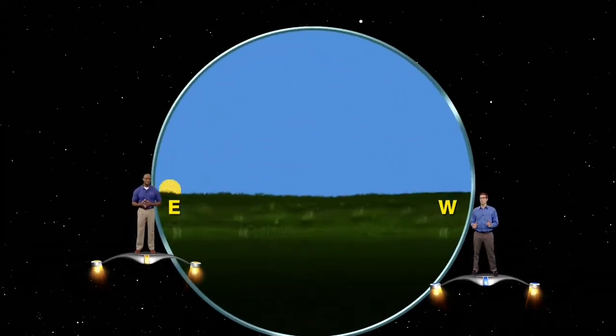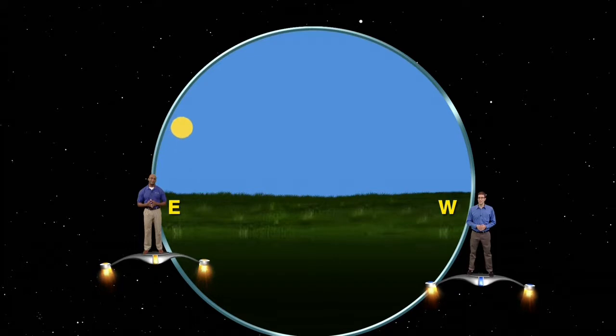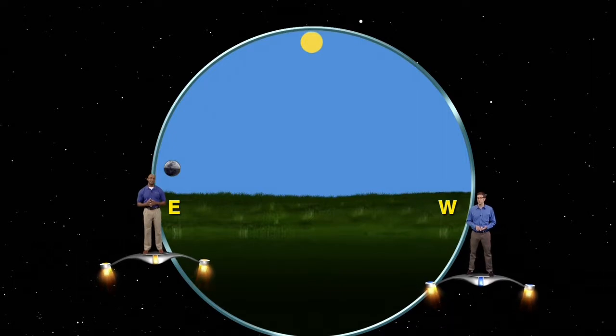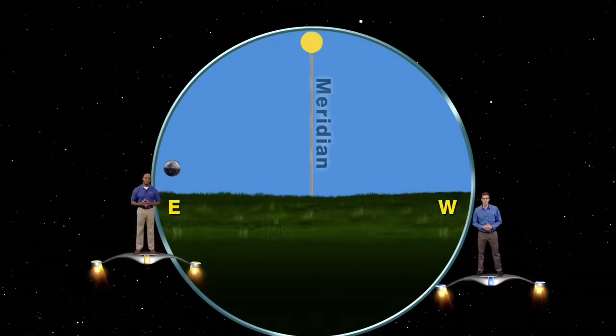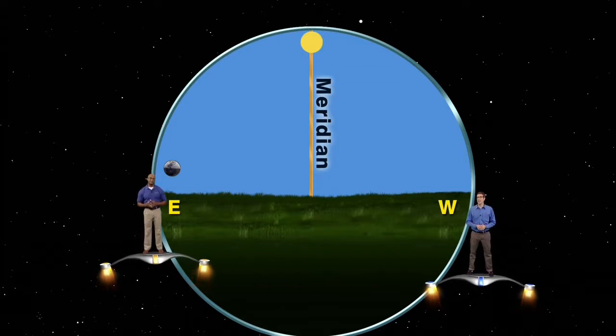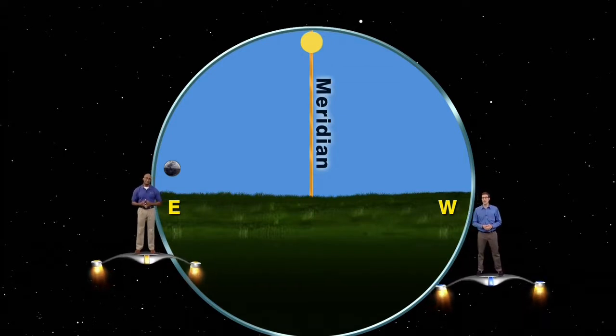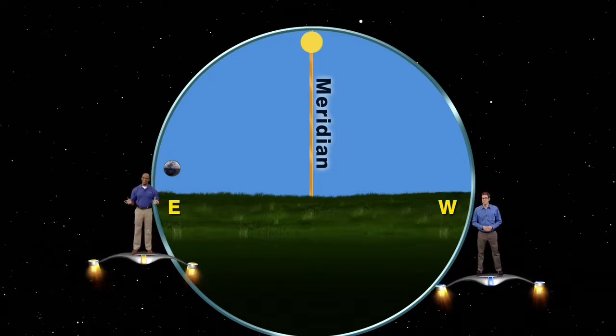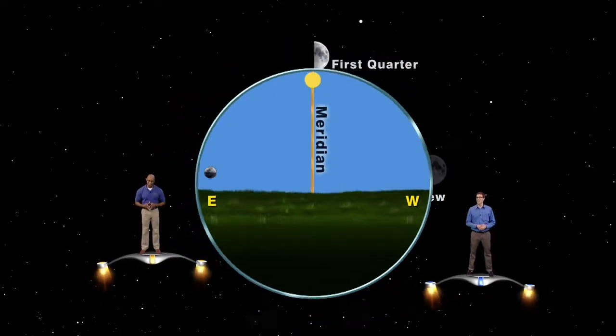That's right, James. As the earth slowly rotates, everything in the sky appears to rise in the east and set in the west. The sun reaches its highest point in the sky at local noon. We call this crossing the meridian. So, if the moon is 90 degrees east of the sun, and if the sun is on the meridian at noon, the moon would be on the eastern horizon at noon. In other words, the moon would be rising.